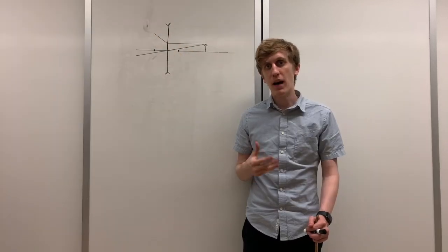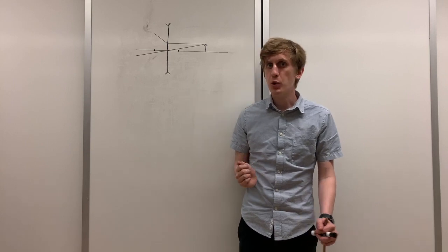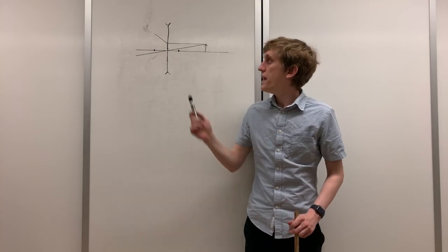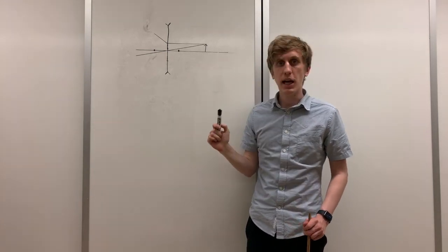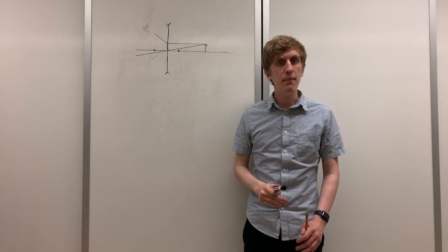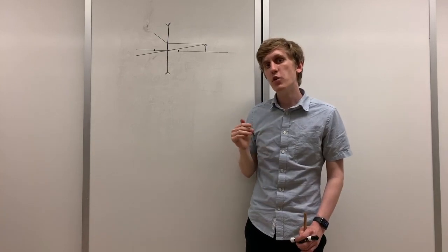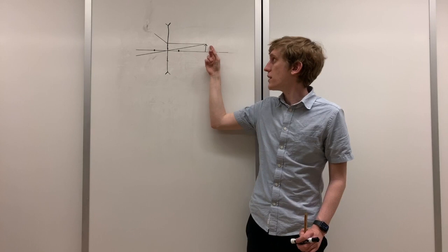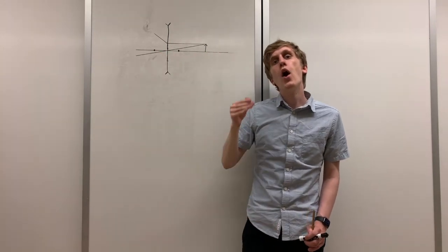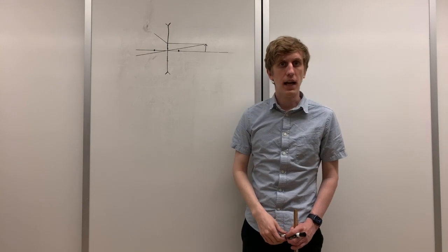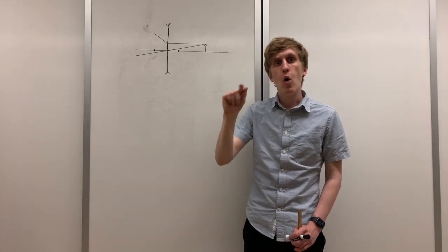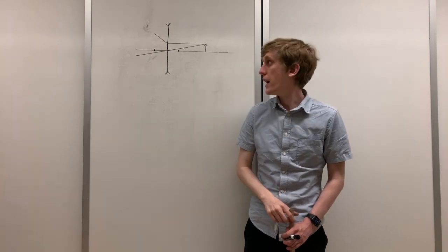The last ray we care about is a ray that's traveling towards the focal point. For the converging lens, this ray passed from the object through the focal point on the same side of the lens as the object. However, for a diverging lens, we want this ray to leave the object as though it was traveling towards the focal point on the far side of the lens, and it will then get refracted and travel horizontally off on the other side.